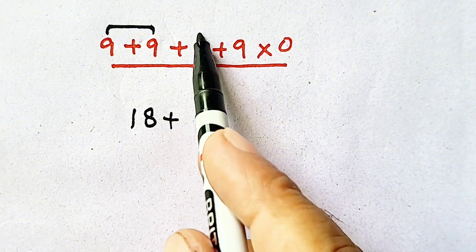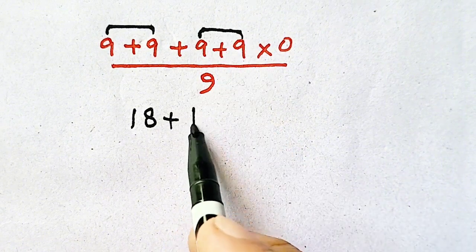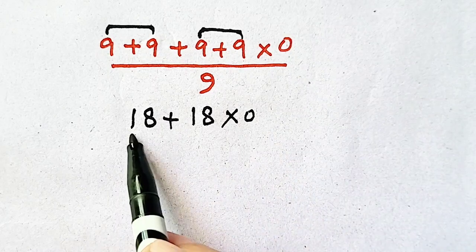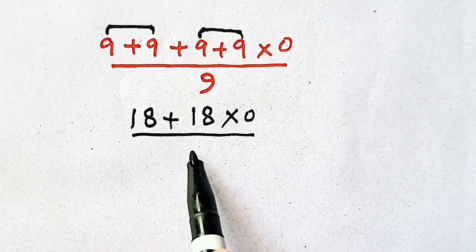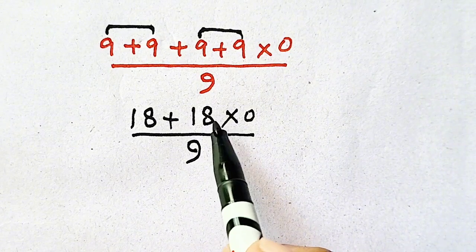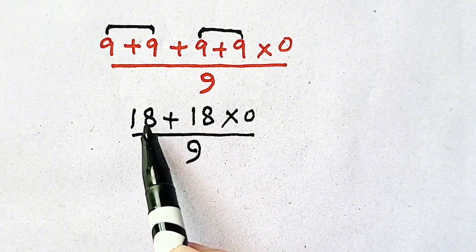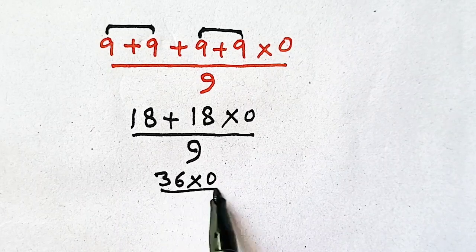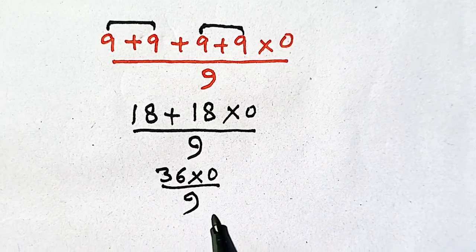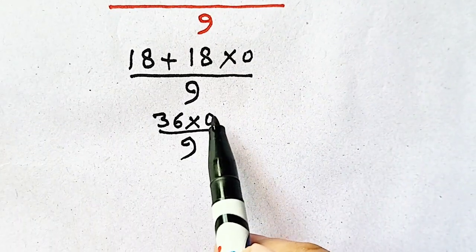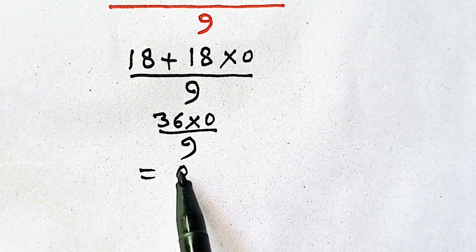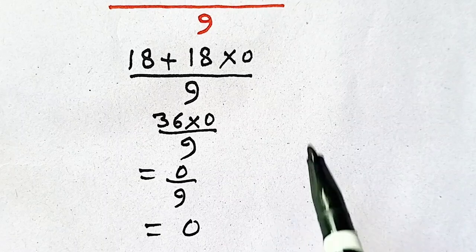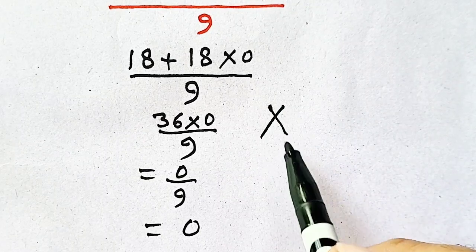And 9 plus 9 is 18, so 18 plus 18 is 36, times 0 divided by 9. Anything multiplied by 0 is 0, divided by 9, so 0 divided by 9 is 0. But this method is incorrect — we didn't follow the order of operations.